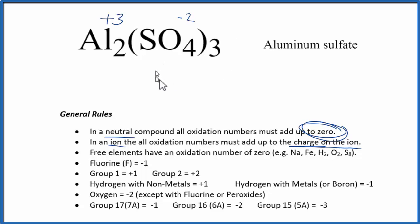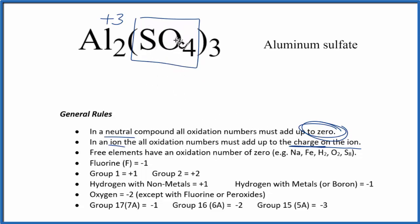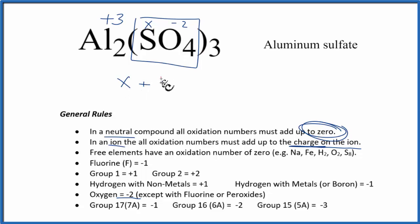Now let's find the oxidation number for sulfur in the sulfate, SO₄. We're just looking at the sulfate ion and want the oxidation numbers for these elements. The sulfate ion has a charge of minus two, so all oxidation numbers in it must add up to minus two. We don't know what sulfur is, so we'll call that X. Oxygen is minus two — with a few exceptions — so each oxygen is minus two. With four oxygens, we set up: X plus four times minus two equals minus two.